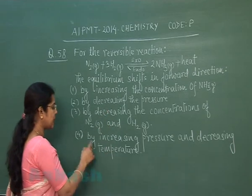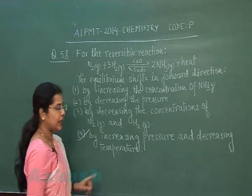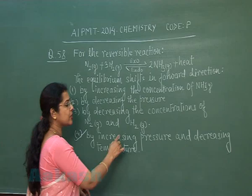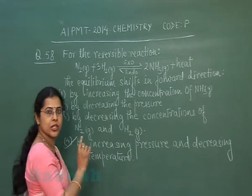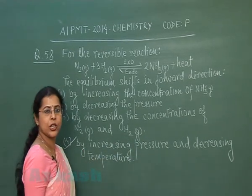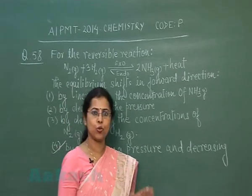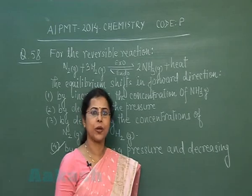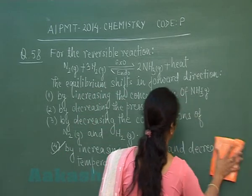You can see that in the fourth option it is mentioned: increasing pressure and decreasing temperature. So the correct option is the fourth option — pressure should be high and temperature should be low.